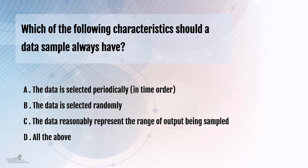random sampling, one of the simplest sampling methods, just uses random sampling from the population. C talks about representative of the range of output.